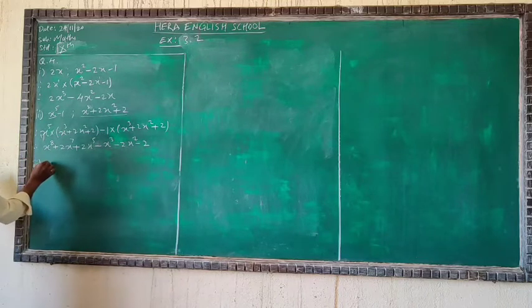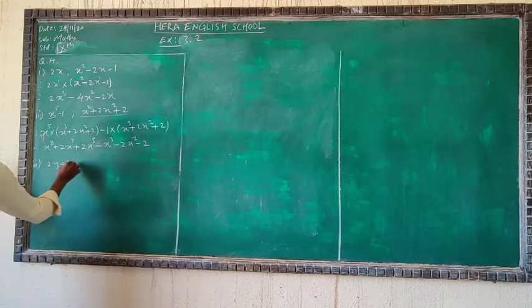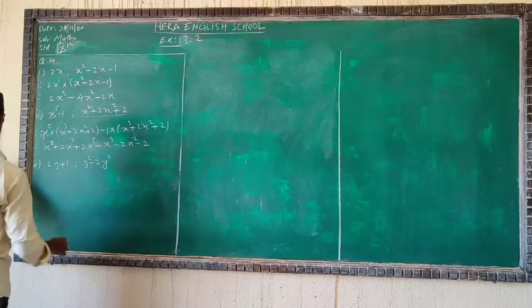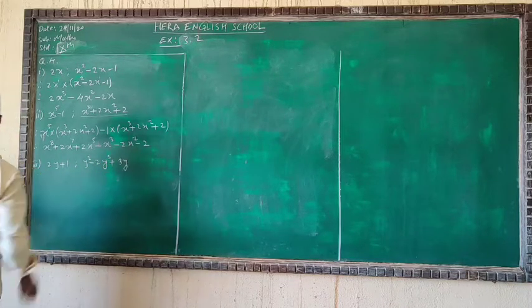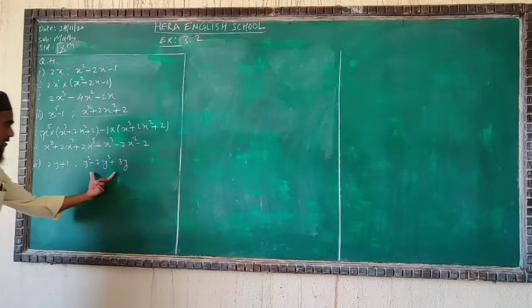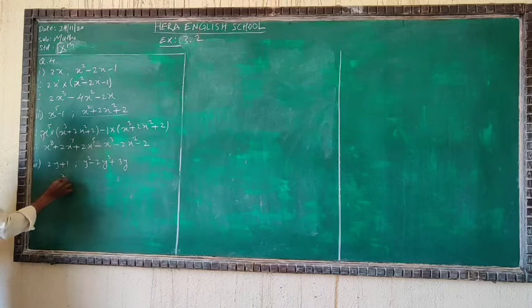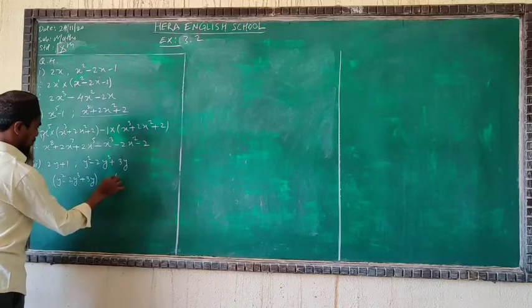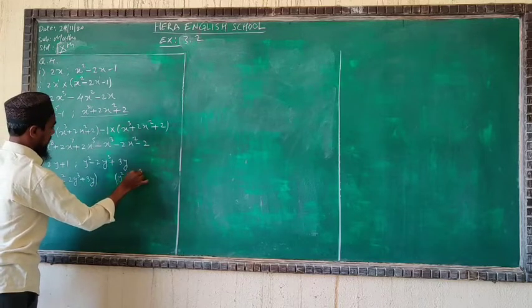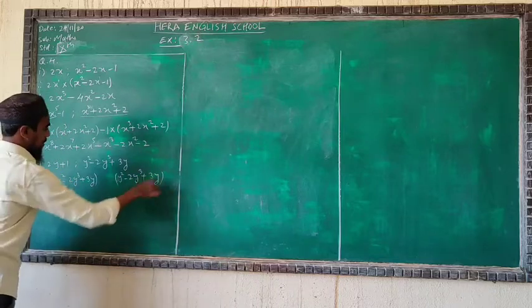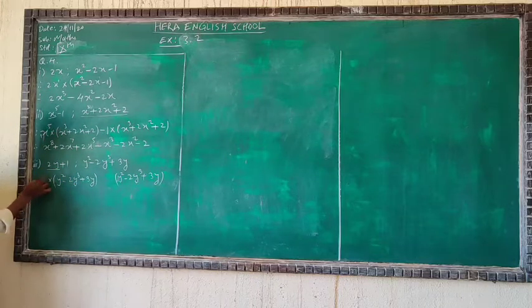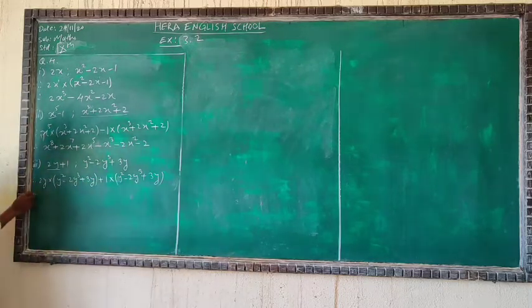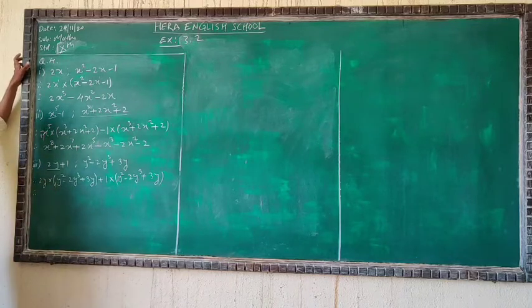Third question: (2y + 1)(y² - 2y³ + 3y). See very well. We write the second polynomial y² - 2y³ + 3y twice — multiplied first by 2y, then by 1.